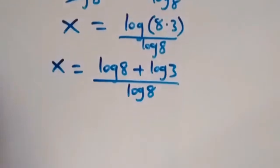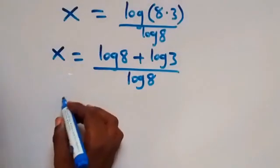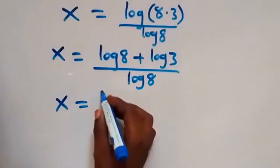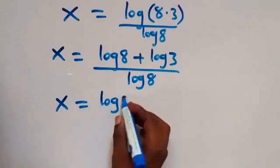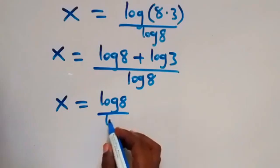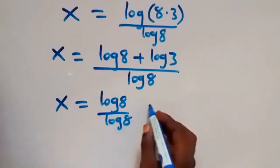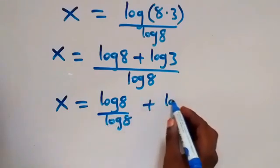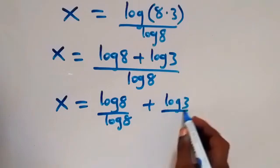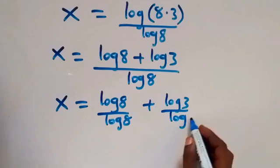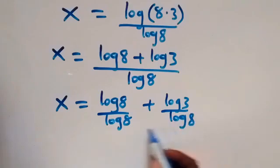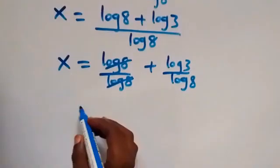We can separate this fraction, so x now equals log 8 over log 8 plus log 3 over log 8. This cancels out to 1, so we have 1.